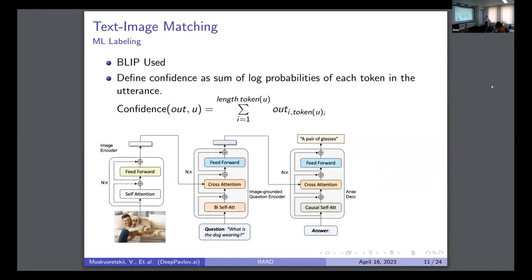And next, we move to the second stage of filtering. All this stuff serves for the task of very proper filtering, so we have a very clean dataset. On the next stage, we use BLIP. For now, we can think of BLIP as a visual question answering model that works. Here we will define the confidence of the model. The confidence of the model is the sum of the log probabilities of the output tokens for the initial utterance that we have.